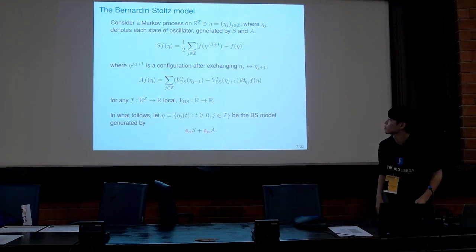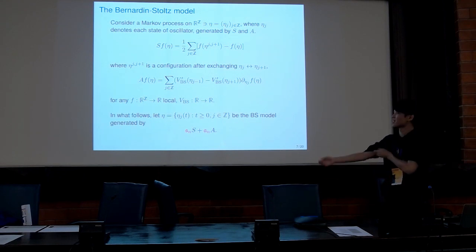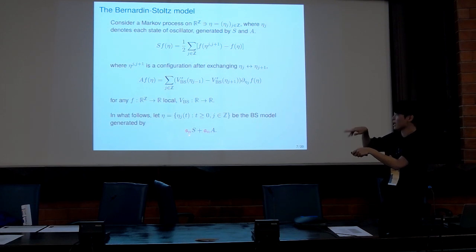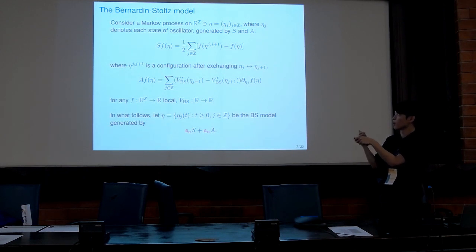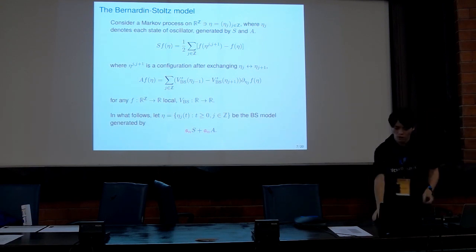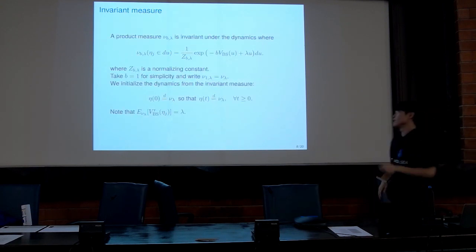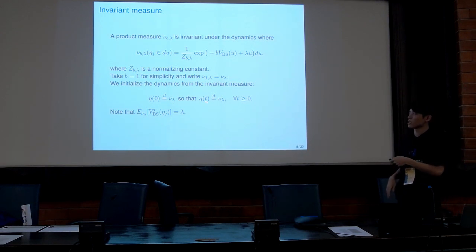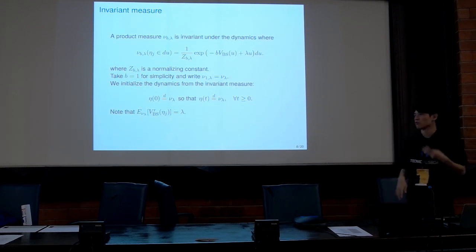S_N should be diffusive, meaning scaled by N squared microscopically. We tune the intensity of A_N depending on the potential, and this choice drastically differs based on the potential. There is an invariant measure of product form, and we initialize the dynamics from this product measure. Here lambda is a parameter which describes the expected value of eta_j.